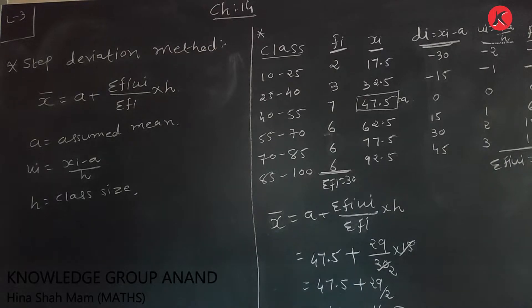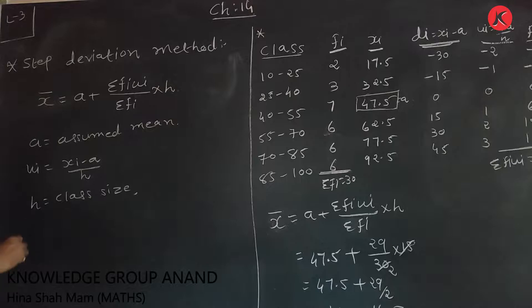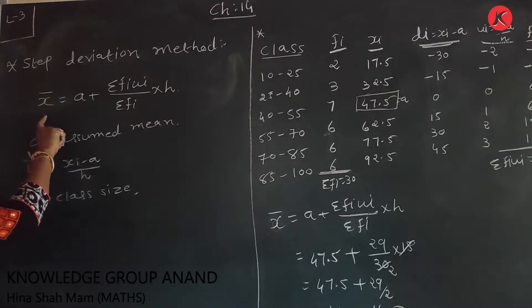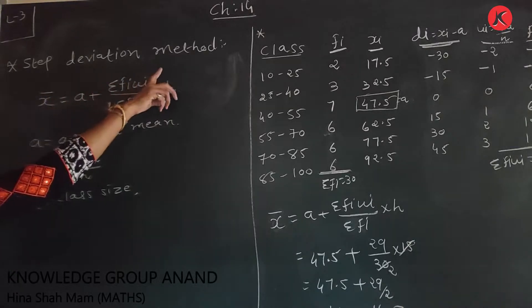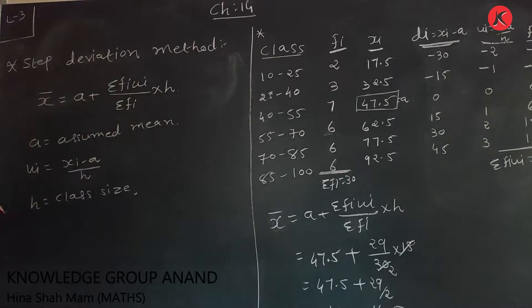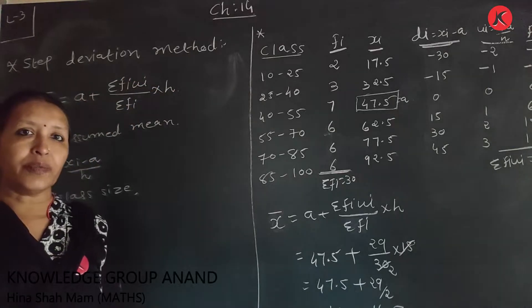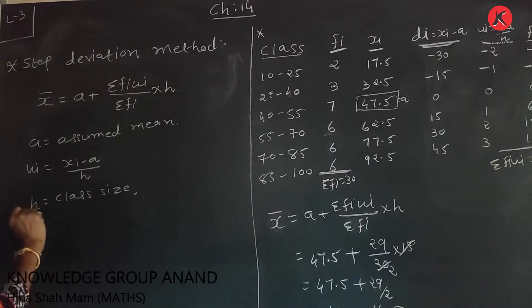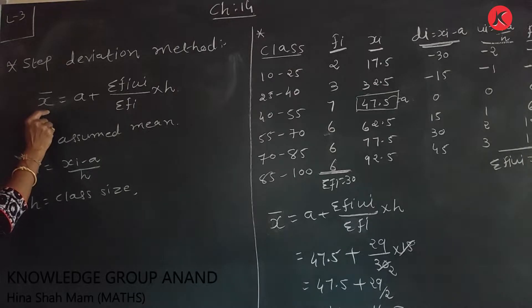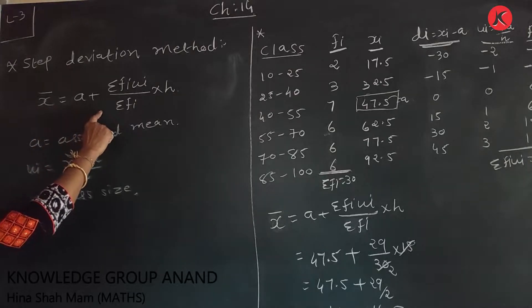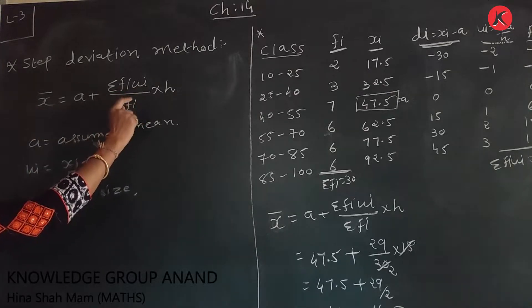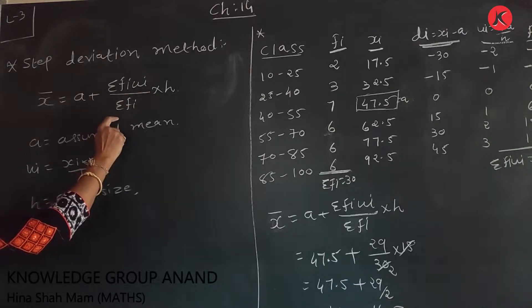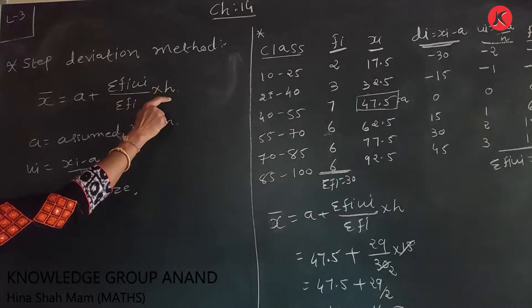We discussed our third method about mean: the step deviation method. We also discussed the direct method, assumed mean method, and now step deviation method. Its formula is x̄ = a + (Σfi·ui / Σfi) × h.